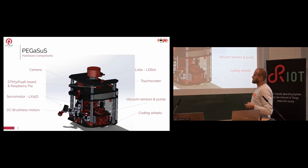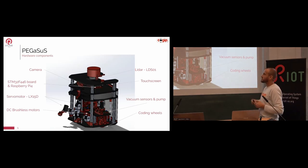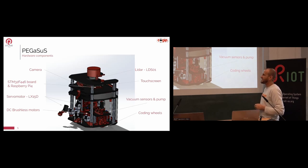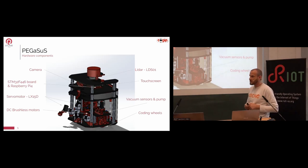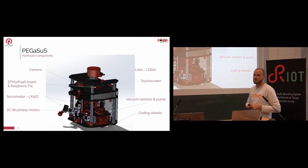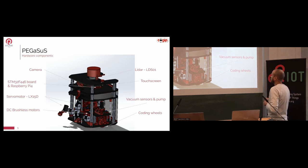Here is Pegasus. The name comes from the first letters of our members' first names — so we can hire new members but their first name must start with A or U, because those are the only ones missing. The hardware components include a camera, an STM32F446 board where RIOT is flashed, a Raspberry Pi 4, LX15D digital servo motors, DC brushless motors for the drive motors, an LDS01 LiDAR, a touchscreen linked to the Raspberry Pi 4, and a vacuum sensor, pump, and cutting wheels.